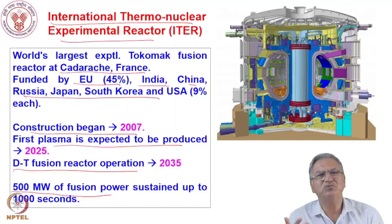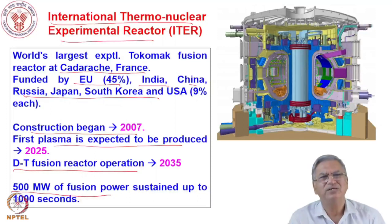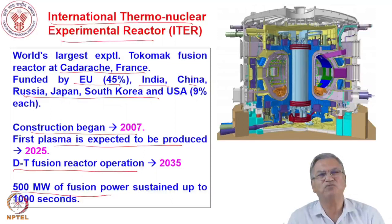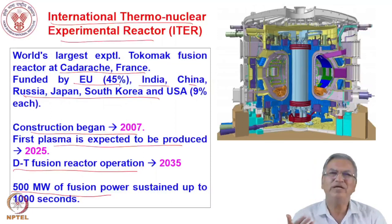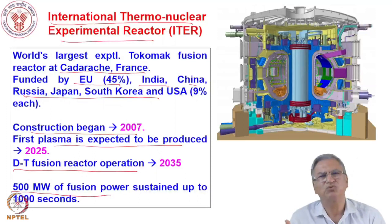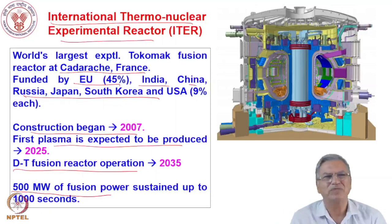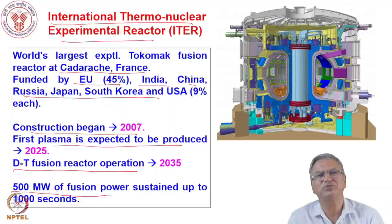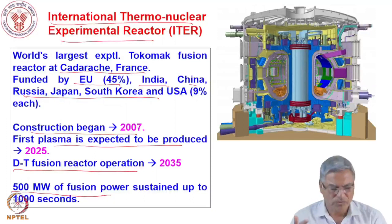India has contributed a great deal in cash and in kind — the cryostat for the reactor was built in India, and many universities are participating. The Institute for Plasma Research at Ahmedabad is the leading agency in the country contributing to plasma research in fusion. This fusion reactor, based on deuterium-tritium fusion, is expected to start operation by 2035 and is expected to generate 500 megawatts sustained for up to 1000 seconds. While that is a very modest target, if fusion power of that magnitude can be sustained for 1000 seconds it will open the door to realizing fusion electricity in the future.